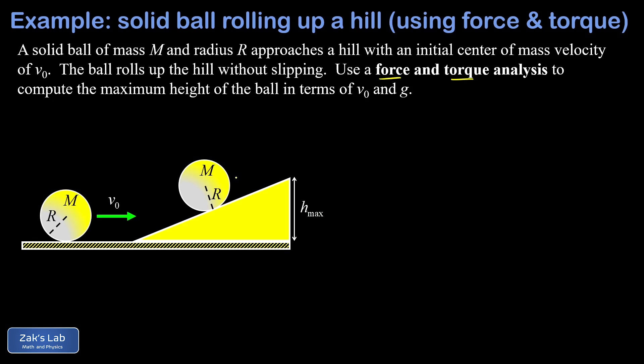So to get started with the force and torque analysis of the problem, we need to get all the forces in the diagram that are acting on the ball on its way up the ramp. In the picture we have kind of this intermediate moment where it's not at its maximum height yet, it's certainly slowing down, and we want to compute that acceleration.